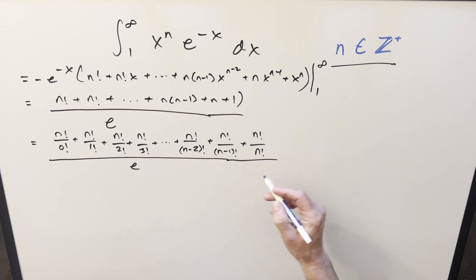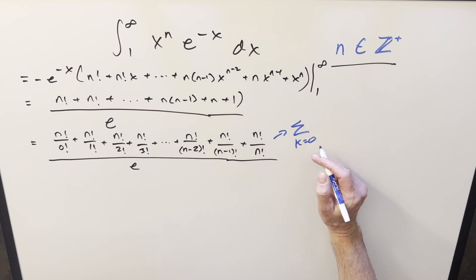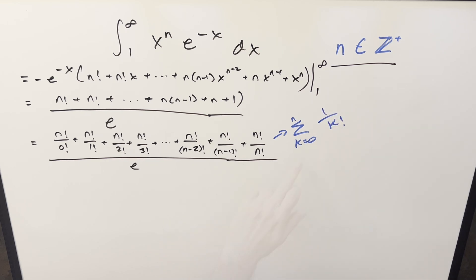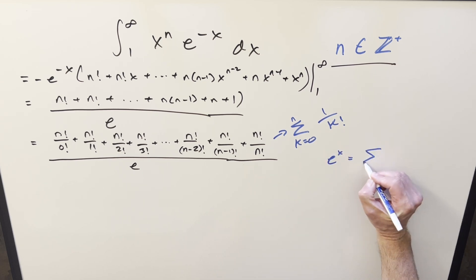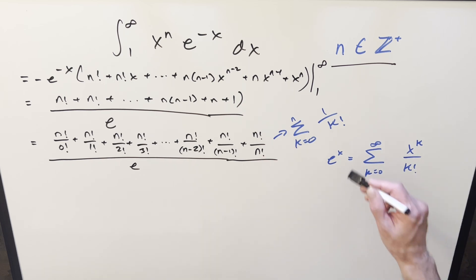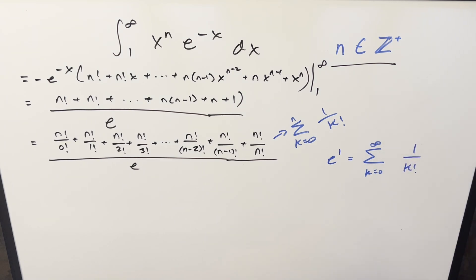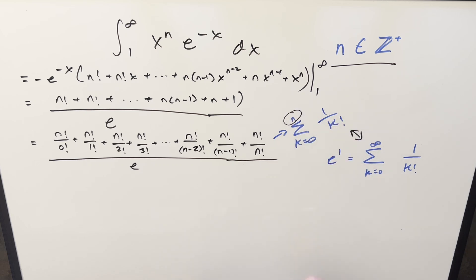If you look at this numerator and think about factoring out n factorial, we could write this as a sum. Using a variable k, going from k equals zero to n, this whole thing is just going to be one over k factorial. And the thing to notice here is this is going to be really similar to the power series for e to the x. With this formula, all I need to do is input a one for x — one to the k is just going to be one. So we're really similar to e to the one. This is a lot like what we did in previous videos where we used the power series for arctan to estimate an integral.